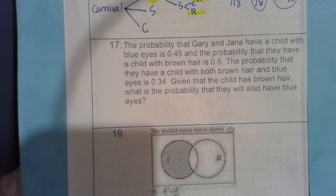Number 17, the probability that Gary and Jane have a child with blue eyes is 0.45 and the probability that they have a child with brown hair is 0.6. The probability that they have a child with both brown hair and blue eyes is 0.34. Given that the child has brown hair, what is the probability that they will also have blue eyes?